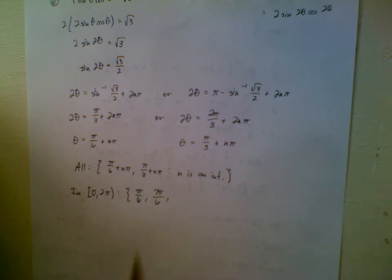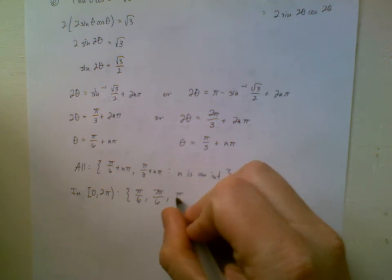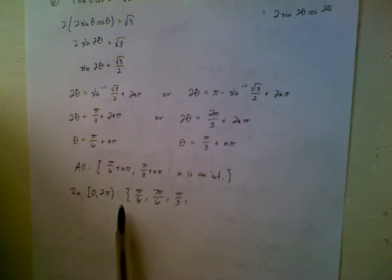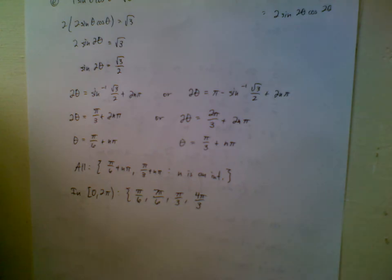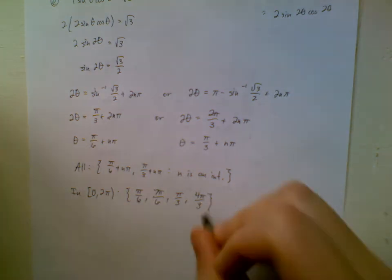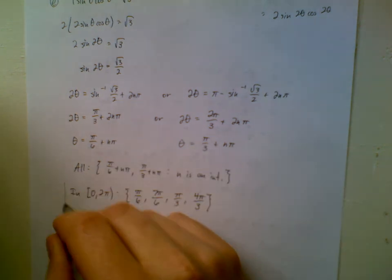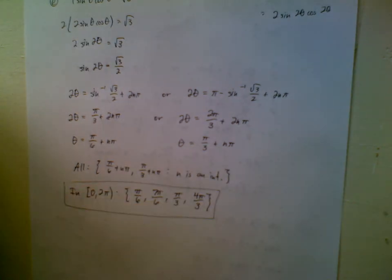Here, when I plug in 0, I get pi over 3. When I plug in 1, I get 4 pi over 3. When I plug in 2, I've gone too far. And there are the solutions that live between 0 and 2 pi.